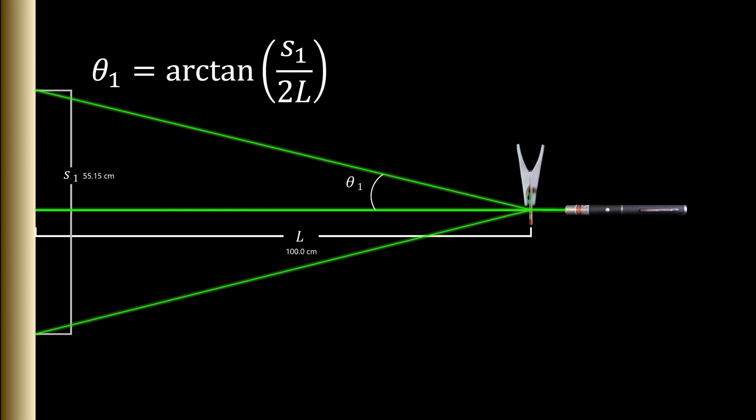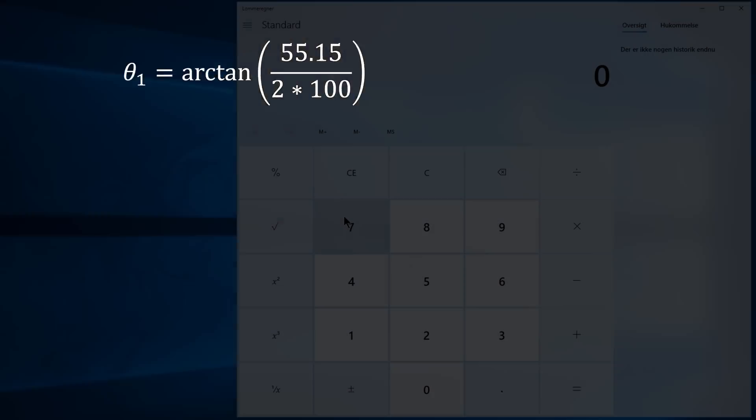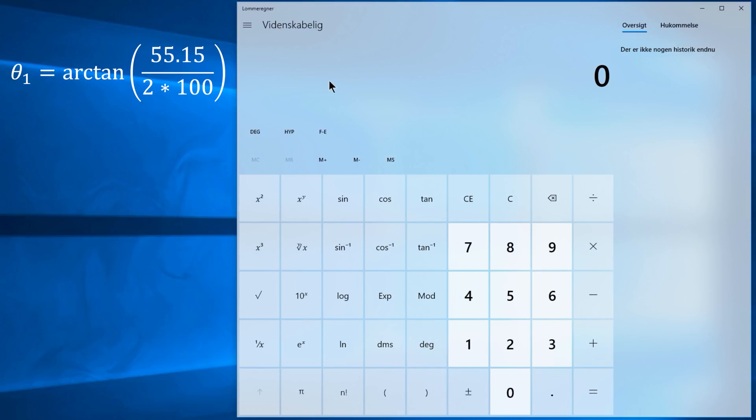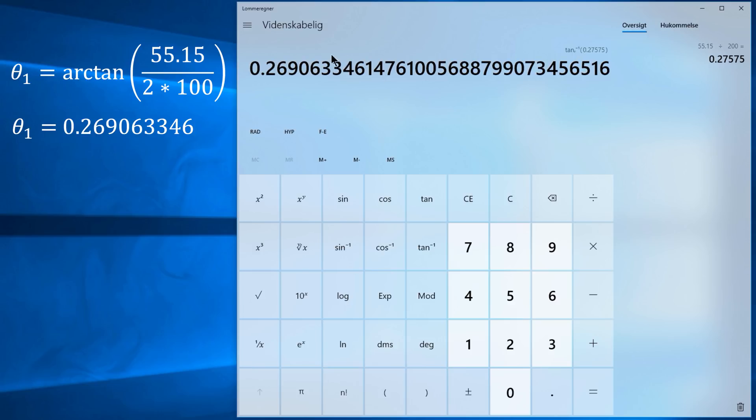Here's the formula we can use for it. Putting the numbers from the experiment into it we are ready to do some maths. I will just use Windows calculator. First we need to change it from standard to scientific. Videnskabelig since mine is in Danish. It is set to degrees here but as mentioned we want radians, rad in short. Now just type in the numbers. 55.15 divided by 200 equals, I'll use the arctan function on this result, and we have the angle in radians. Nice. Oh you can use a spreadsheet too with this formula. Spreadsheets should use radians as standard.